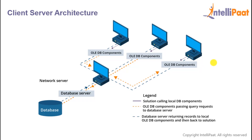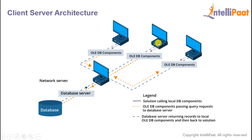Let's say you are logged into the IRCTC website and want to know the number of trains running from one place to another. You'll send a request from your system to the network server. This network server sends the same request to the database server, which is finally forwarded to the database, and then the final result is sent back to the user system.